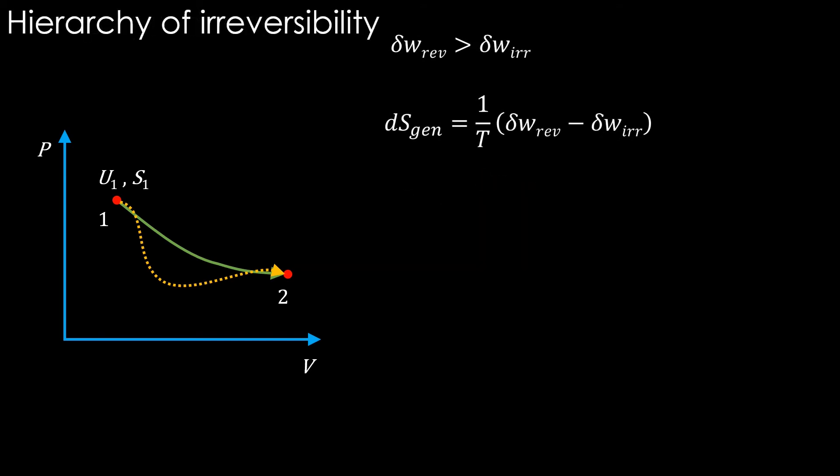Let's see the idea of hierarchy of irreversibility. What I mean is that there are processes which are less irreversible than others. For example, consider the blue path here. It is irreversible but closer to the reversible path than the yellow path. Let's name the yellow path A and the blue path B.